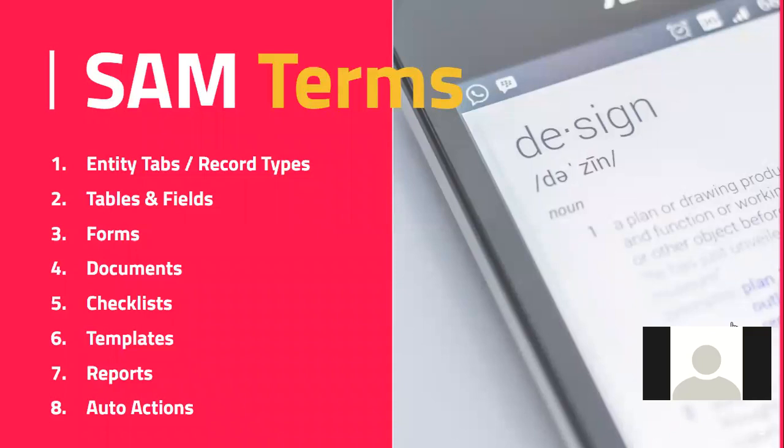Checklists are your workflow — a combination of action items like sending an email, recording that an orientation class was taken, or uploading documentation. Checklists can be used by both internal users and external end users like families, so you can share that visibility. Templates are communications sent out of SAM, and they can also be used for statements or printed documents, keeping a consistent message while pulling personalized information from that record.